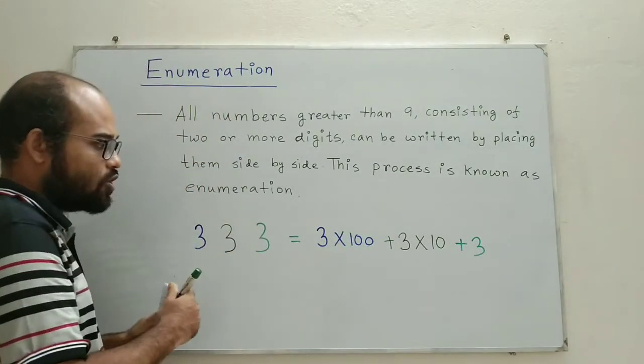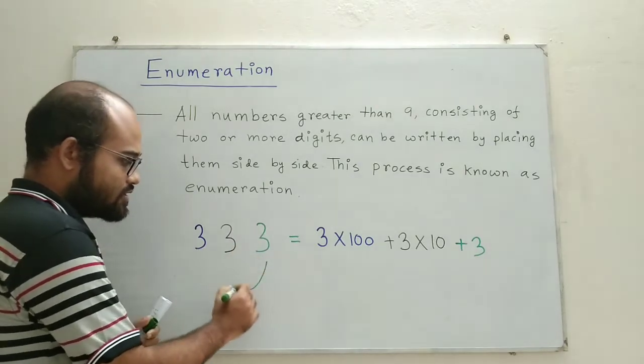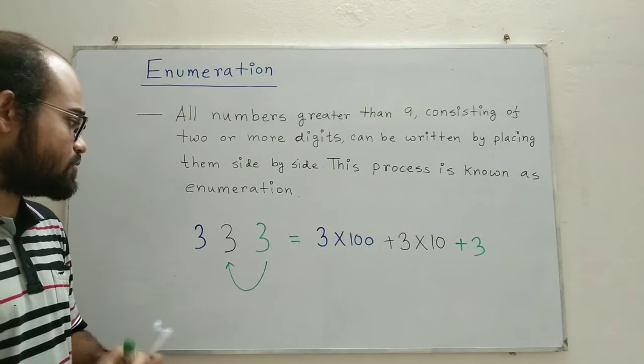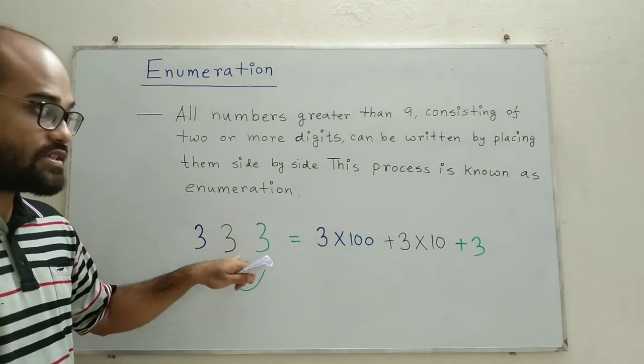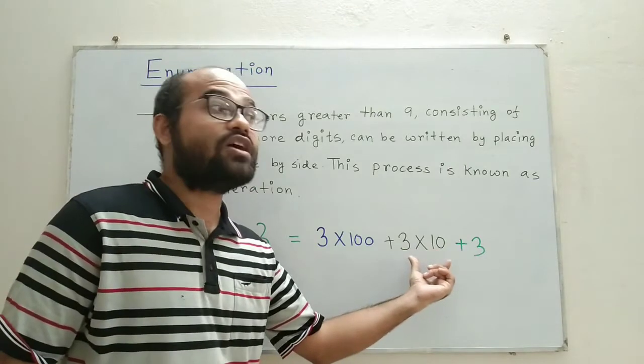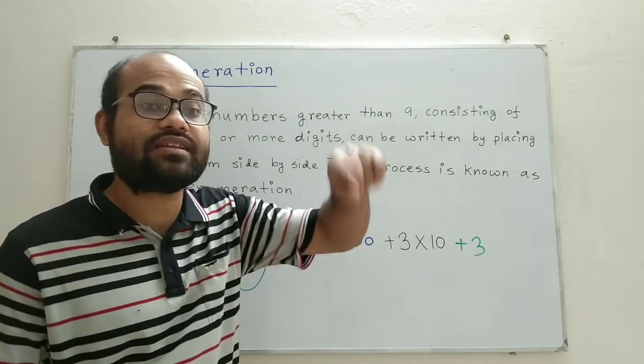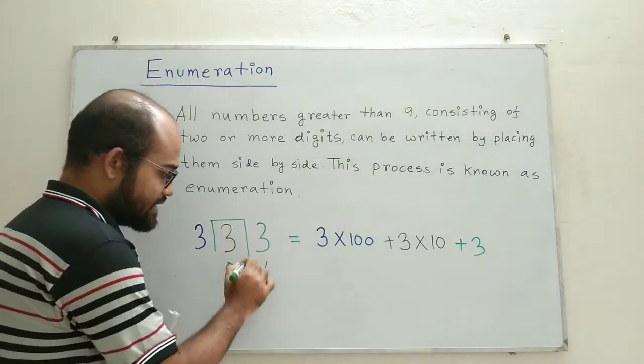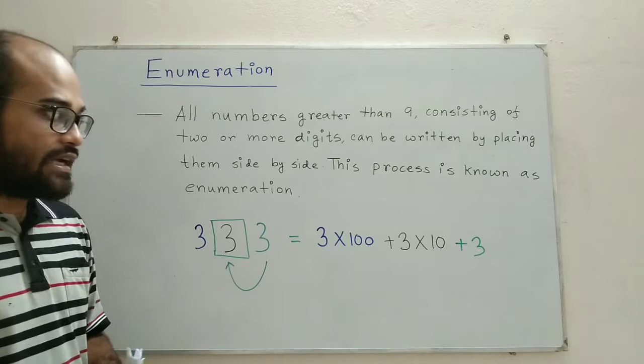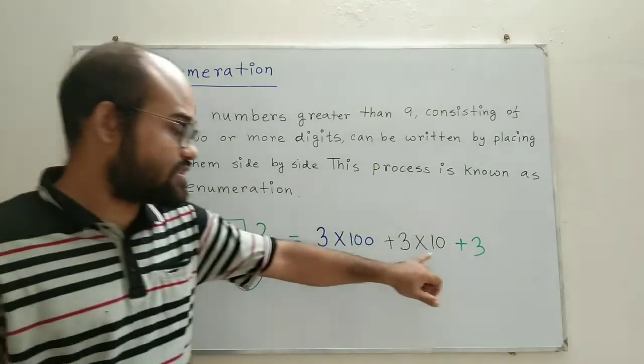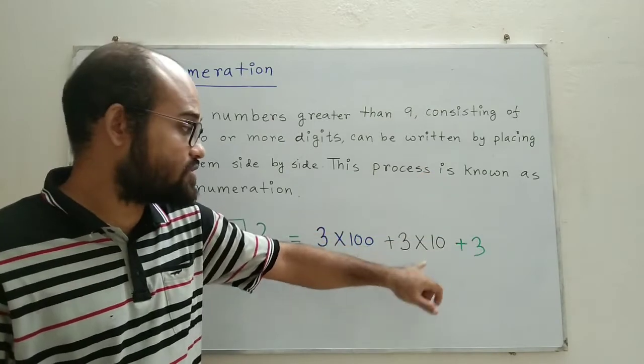As we hop over one place to the left, coming over to the 3 being expressed in black, this 3 actually expresses a number 10 times greater than itself. We see that this 3 is in the tens place and expresses a value 10 times greater than itself, which is 30.